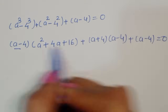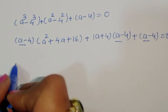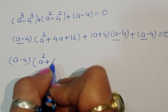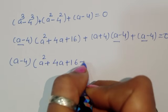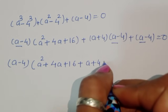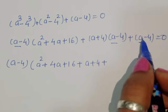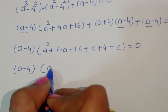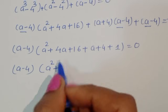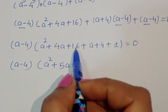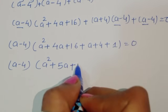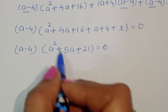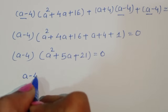We can take (a minus 4) as a common factor. Factoring it out gives (a minus 4) times (a² plus 4a plus 16 plus a plus 4 plus 1) equals 0, which simplifies to (a minus 4)(a² plus 5a plus 21) equals 0. So we have two equations: a minus 4 equals 0, and a² plus 5a plus 21 equals 0.